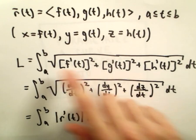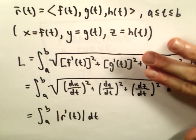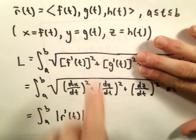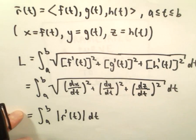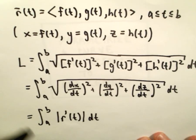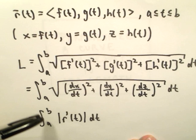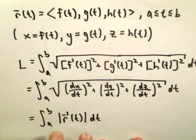That may look familiar from parametric curves in the xy plane — if it's just 2D, you have f prime squared plus g prime squared under the square root. Here we're just adding the extra component squared. We can write all this more compactly as the integral from a to b of the magnitude of the derivative of the vector r.